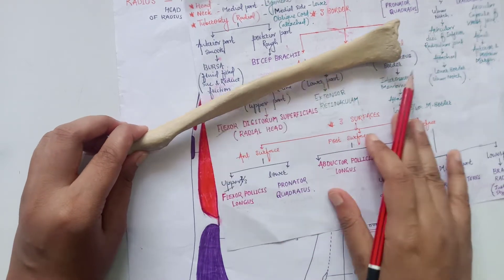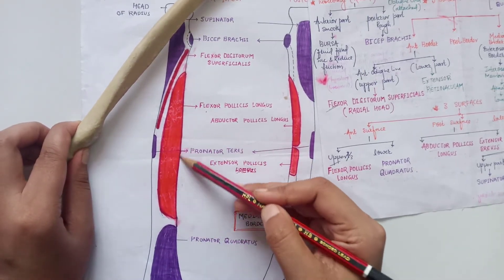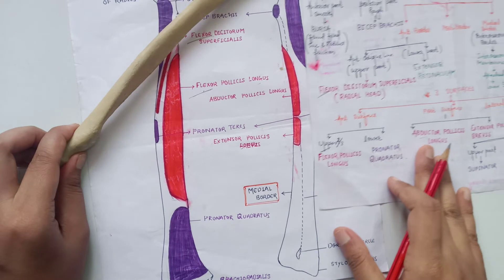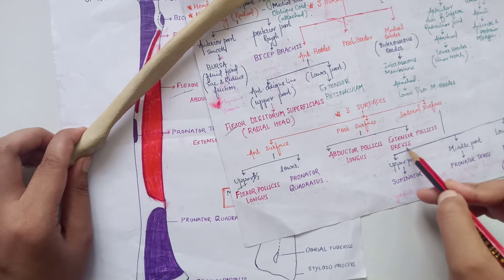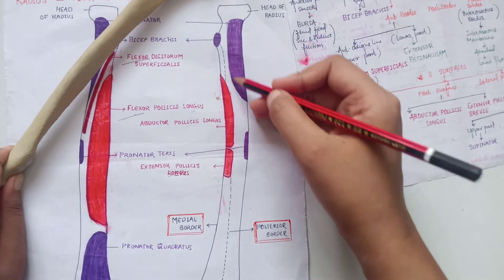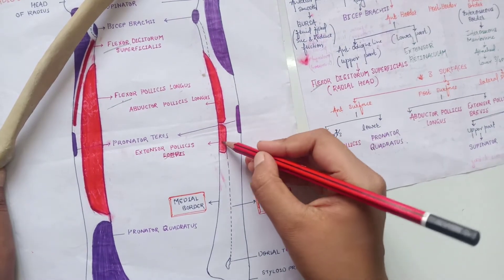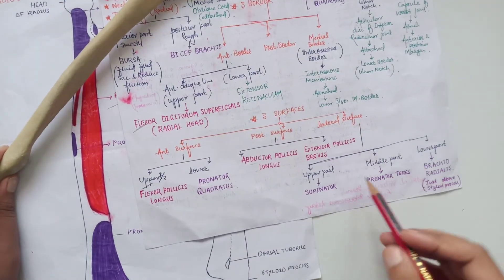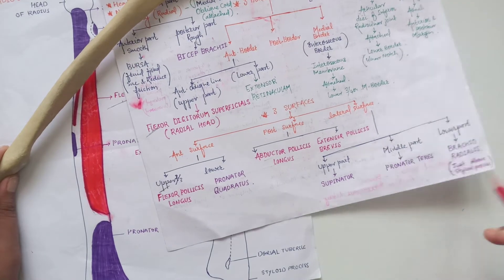On the posterior surface, the abductor pollicis longus and extensor pollicis brevis are present. On the lateral surface, the upper part has the supinator, the middle part has the pronator teres insertion, and the lower part has the brachioradialis insertion, just above the styloid process.